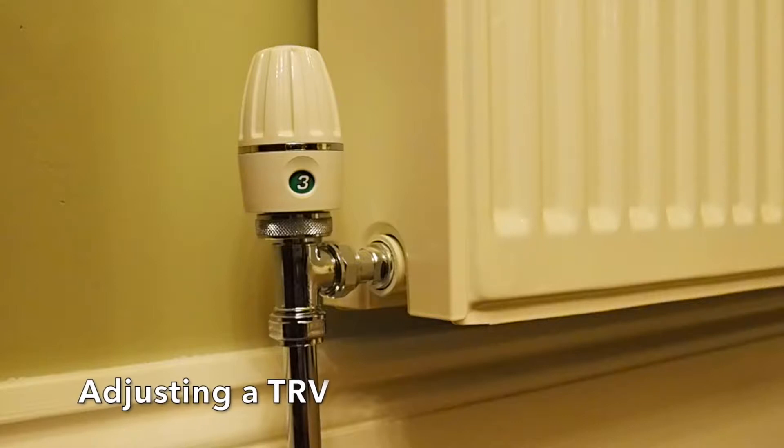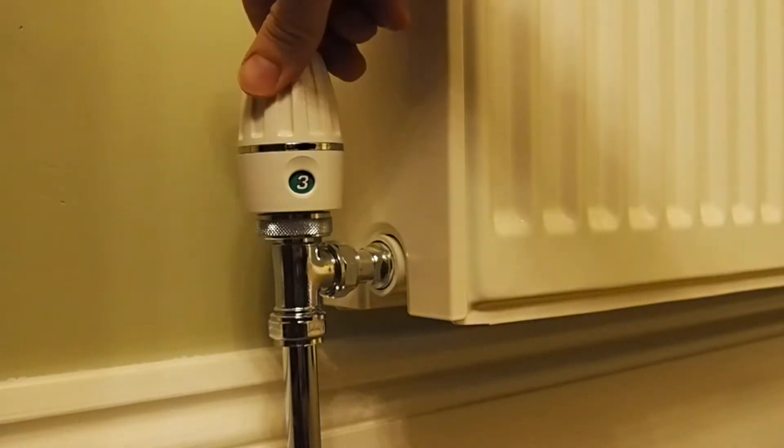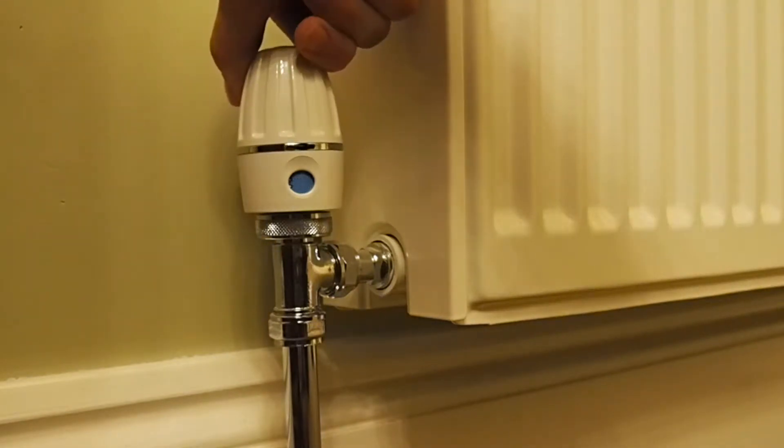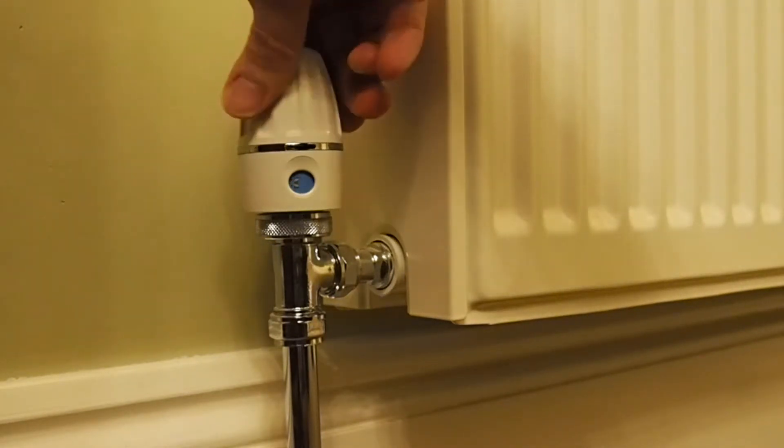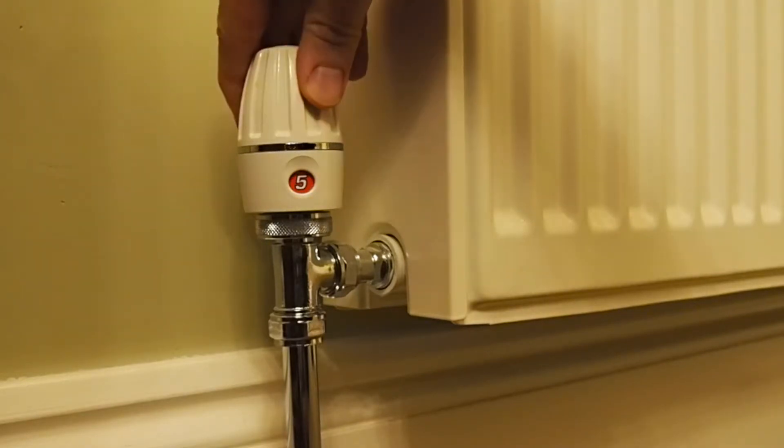A TRV can easily be adjusted, usually between 0 and 5. When it is at its coldest setting, the radiator will not heat up at all, and when it is at its highest setting, the radiator will get hot.